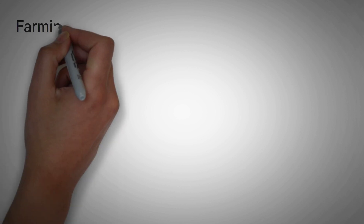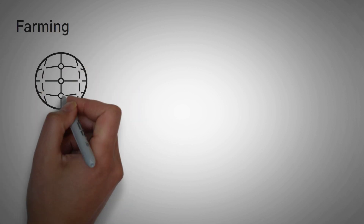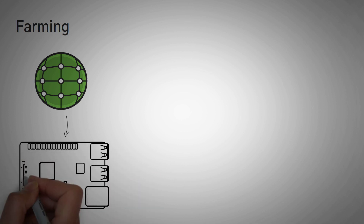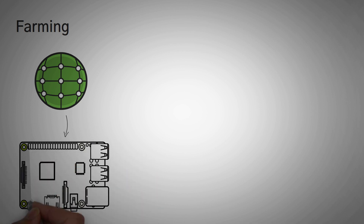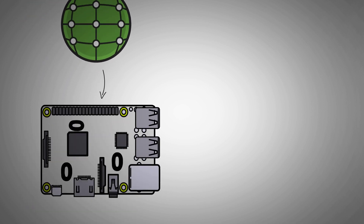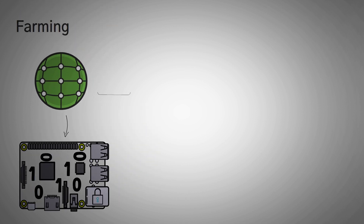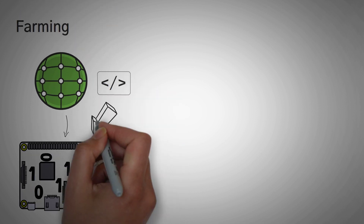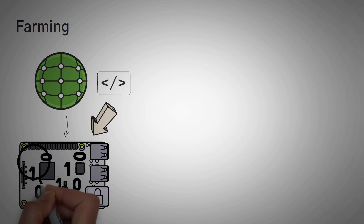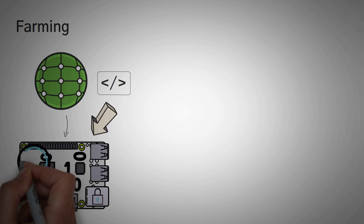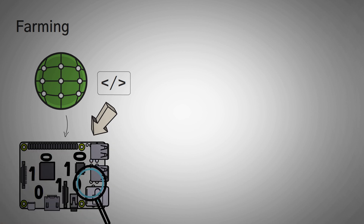Farming is the process of having the network check that you actually did the work to store the ones and zeros on those drives. In plotting, you are putting the data on your hard drive, and farming is just making sure that you still have it there. Using an algorithm, the entire Chia network will randomly pick a part of the network and check if they still have the data that it decided to give them. If they do, it will reward whoever kept that data there with some Chia.